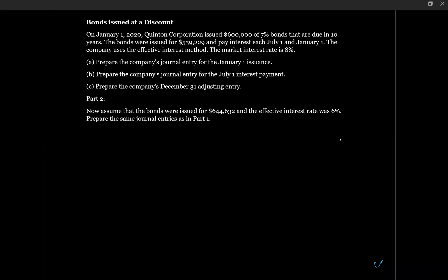Let's take a look at a question where a bond is issued at a discount and then at a premium. On January 1, 2020, Quinton Corporation issued $600,000 of 7% bonds due in 10 years. The bonds were issued for $559,229 and pay interest each July 1 and January 1. The company uses the effective interest method. The market interest rate is 8%.